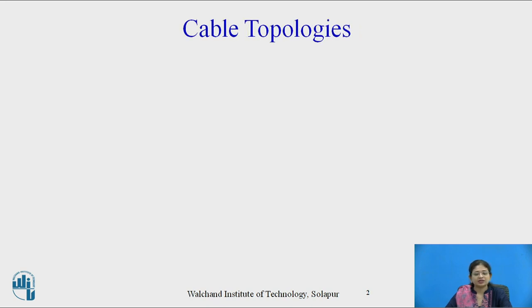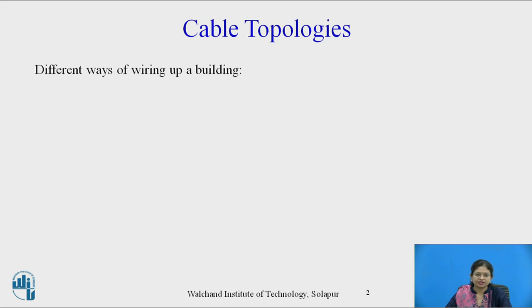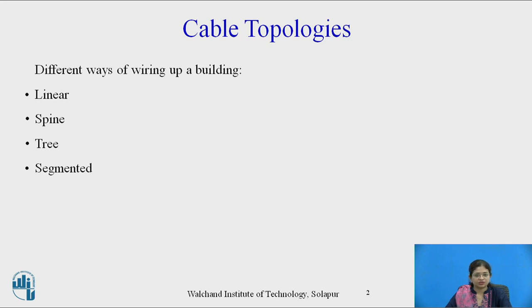Let's start with the cable topologies. Cable topologies means different ways of wiring up a building. There are different ways provided by IEEE 802.3: linear topology, spine topology, tree topology and segmented topology.